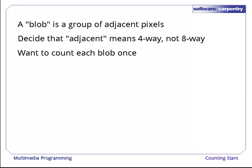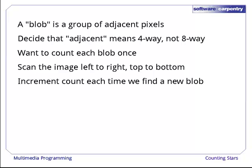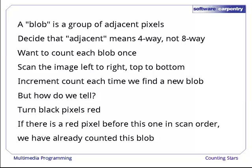We want to count each such blob once. So we'll scan the image left to right, top to bottom, and each time we find a new blob, we'll increment our count. But how do we tell whether the pixel we're looking at is part of a new blob or not? One way is to mark the pixels we've already seen by turning them red. If the pixel we're looking at touches one that has already been turned red, then it's part of the blob that we've already counted. We'll turn it red to show that we have looked at it, but we won't count it as a star since it belongs to a star that's already in our list.